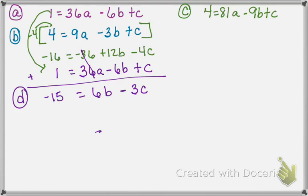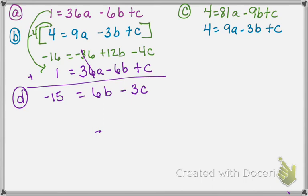So now we have a new equation d. We're going to take equation c that we started with and use another one — I'm going to use equation b. So I'm going to put this one that we had originally: 9a minus 3b plus c. I want to get that a to cancel again because I want something I can put with equation d to solve for one of the other variables.